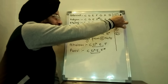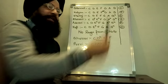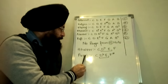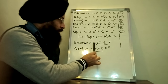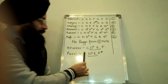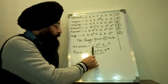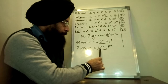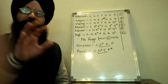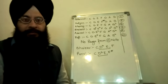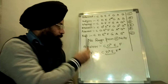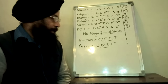In case of Bhairav and Purvi, Sa is shuddha, Re is komal, and Ga is shuddha — these particular 3 notes form a pattern you can never play on your harmonica without pressing the slider. That is another reason for the use of the slider in case of these 2 particular thats.